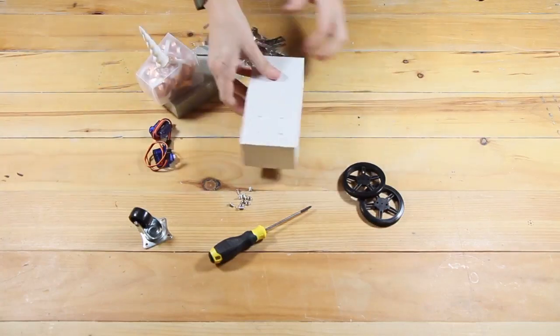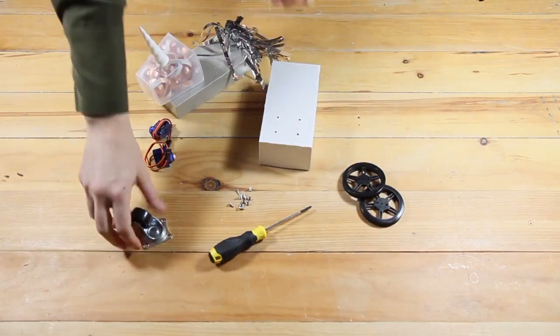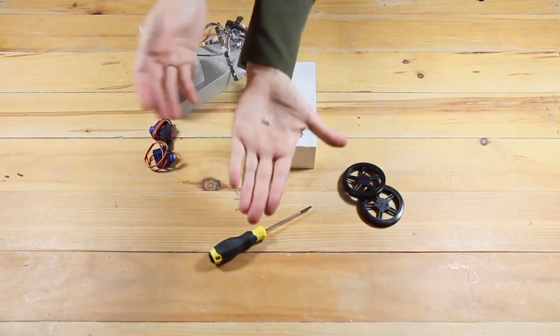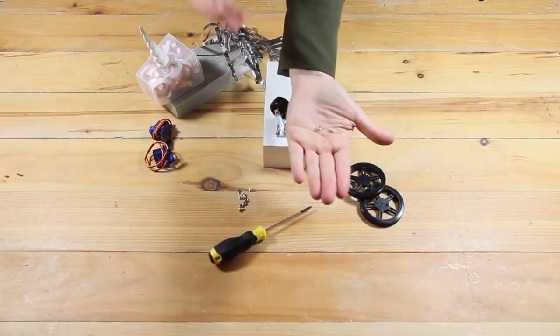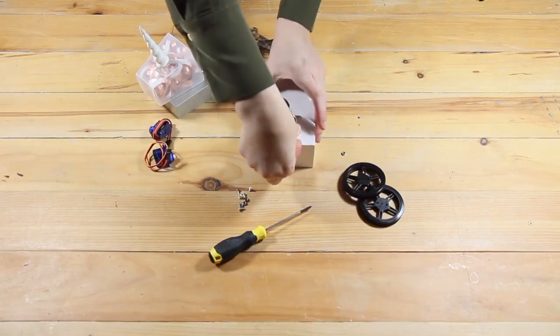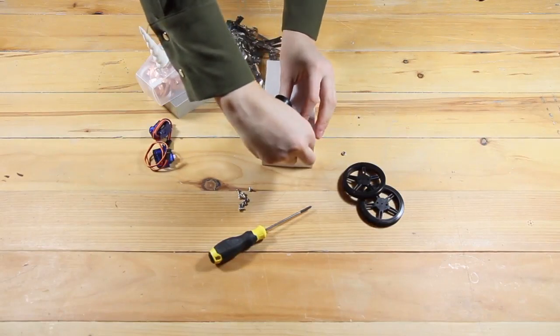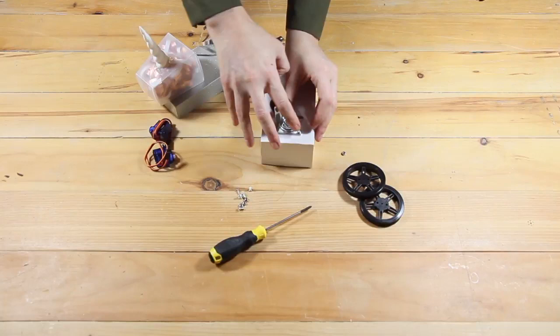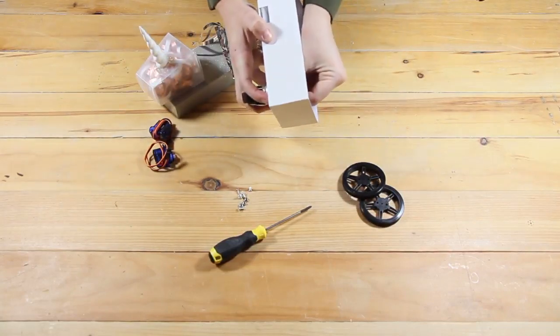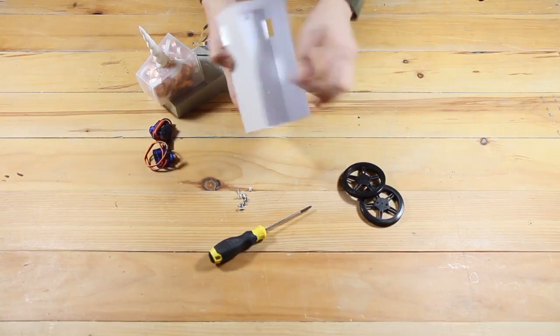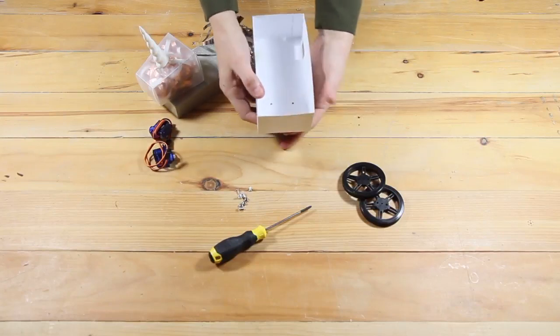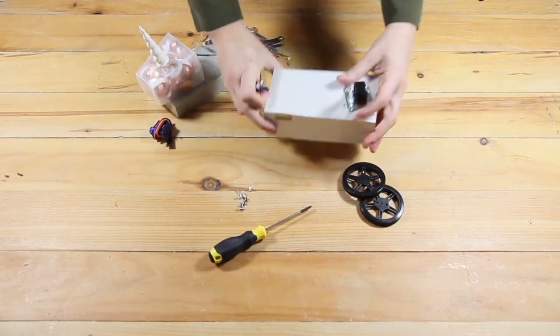Next we're going to put the caster wheel on the bottom of our body. So turn it over and you can line up the caster holes with the holes on the bottom of the chassis. You're going to need your little nuts and bolts for this one. You should have four of each in the pack. Pop them through from the bottom to the top and secure it in place like so. There are four of them, so put them all in place before moving on to the next step.